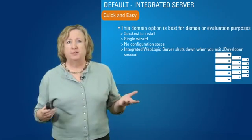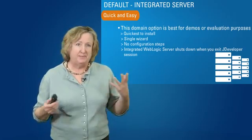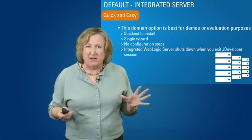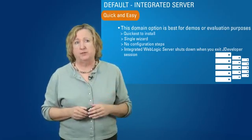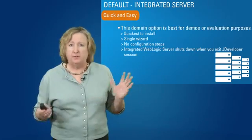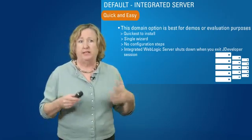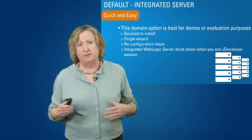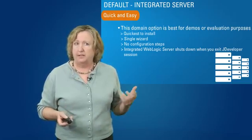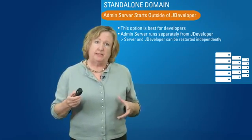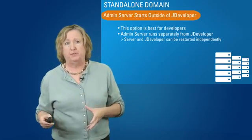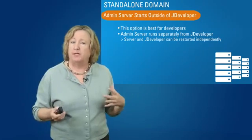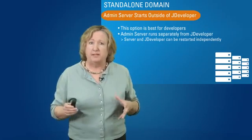The default configuration's value is that it's quick and easy. It's very good for evaluation purposes because you don't need to know much about anything. It's also convenient for demos — there are no configuration steps at all. The integrated server shuts down when you exit JDeveloper, so they run together. That makes it ideal for demos and evaluations. The standalone domain is the same configuration but outside of JDeveloper, making it a good option for developers — the server runs separately from JDeveloper.